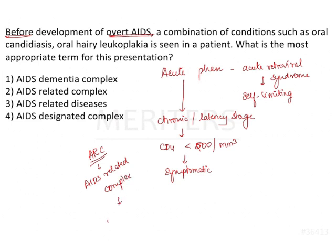AIDS related complex represents the prodromal phase of AIDS, where patients develop these combinations of conditions just before developing the overt AIDS phase. Therefore, out of the four given options, the most appropriate term for the presentation mentioned in the question is AIDS related complex.